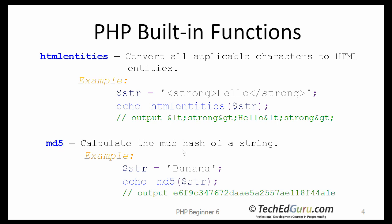MD5 calculates the MD5 hash of a string, and this is used for encrypting passwords. When you request a password from the user initially and want to store it in your database, you would generally use this function to encrypt the password.